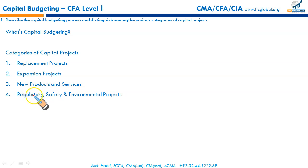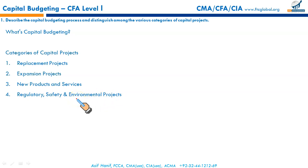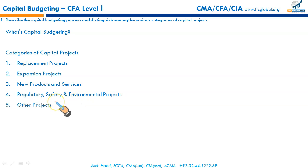The fourth type of capital project would be regulatory, safety, and environmental projects. Maybe the government has required firms to use certain types of machinery — what you call green technology. Such investments may not generate revenue, but they will involve sizable outflows. Finally, some other projects — there might be many others, such as expanding a new product line, entering a new geographical region, etc.